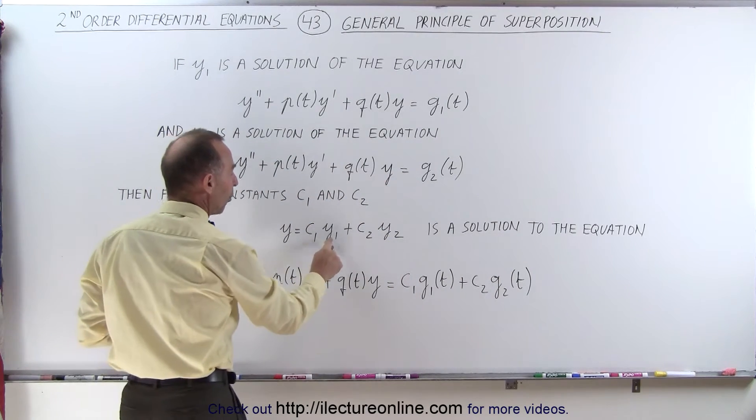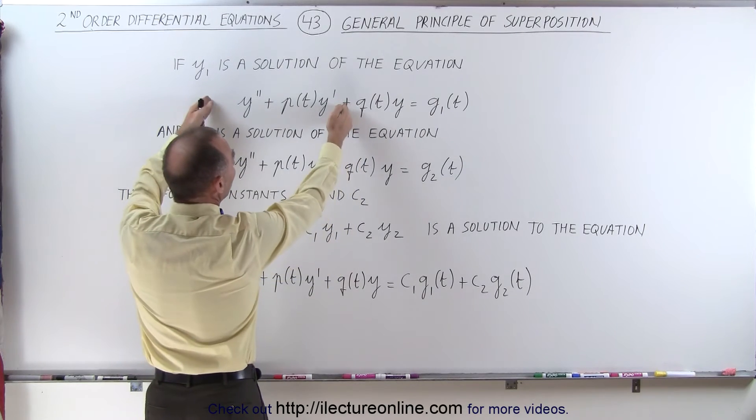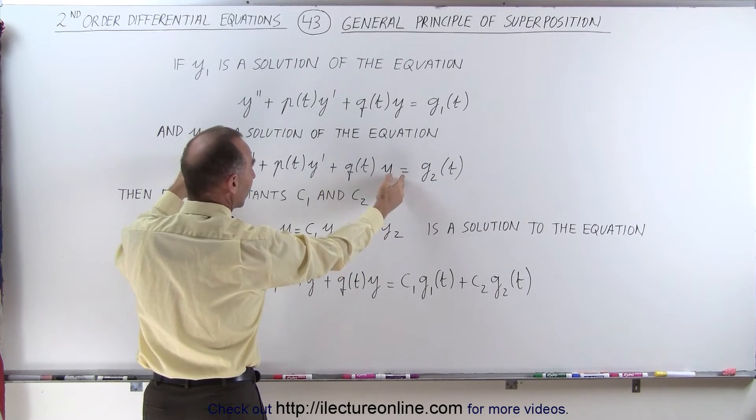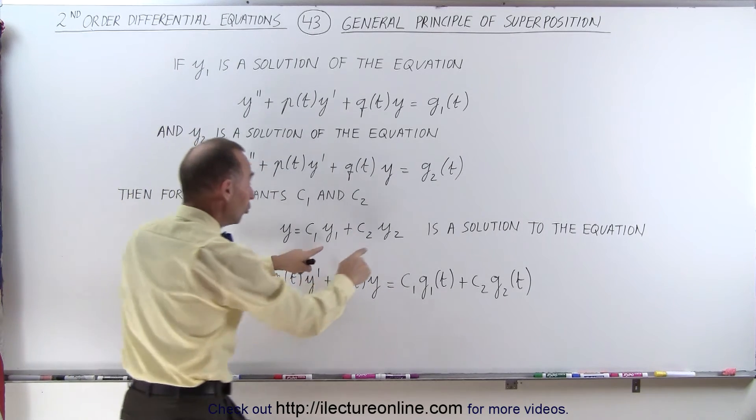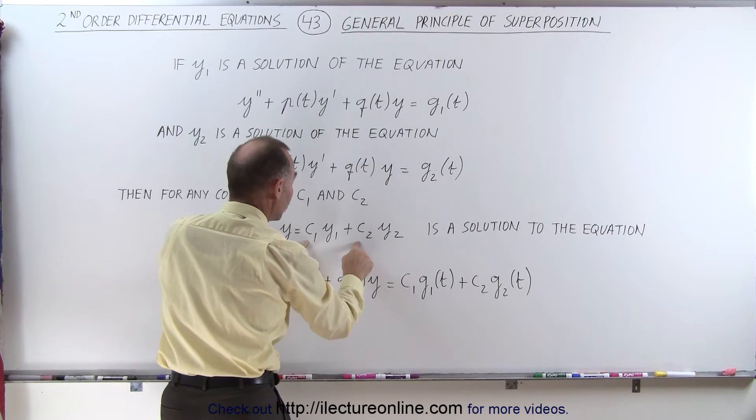In other words, if y1 is the solution to this equation, and y2 is the solution to this equation, then the sum of those two solutions, and then each of the two solutions multiplied by a given constant, c1 and c2,